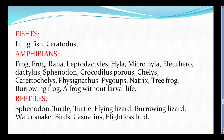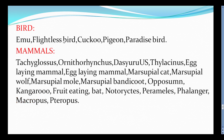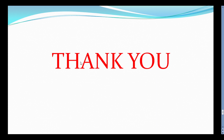Reptiles include Sphenodon, turtles, flying lizards, burrowing lizards, water snakes, and Sauros. Birds include flightless birds, emu, cuckoo, pigeons, birds of paradise. Mammals include Tachyglossus, marsupial cats, marsupial bandicoots, perameles, macropods, wombats, fruit-eating bats, and kangaroos. This is all about zoogeographical regions. Thank you.